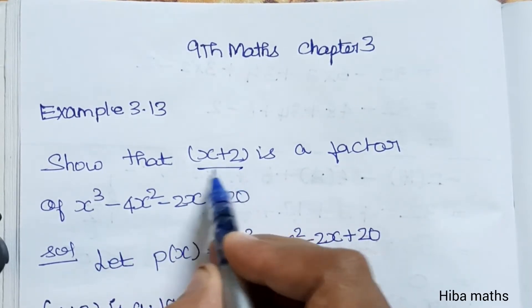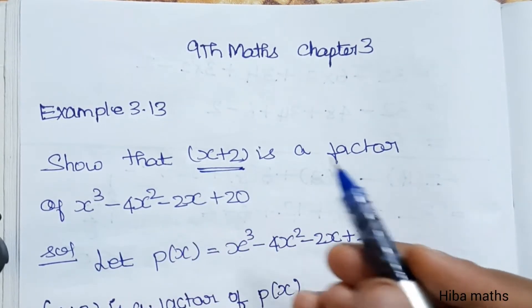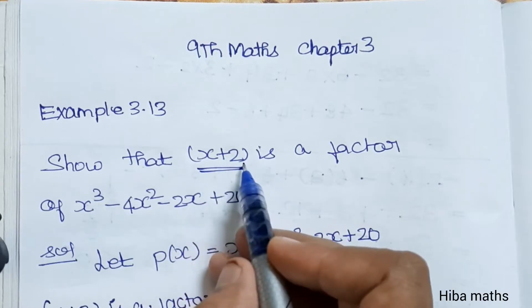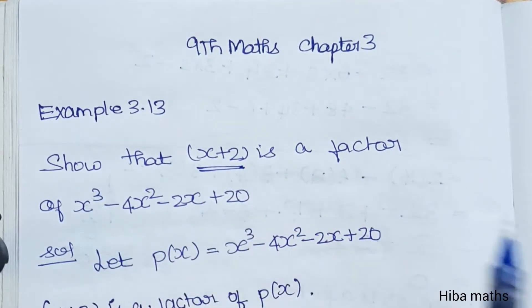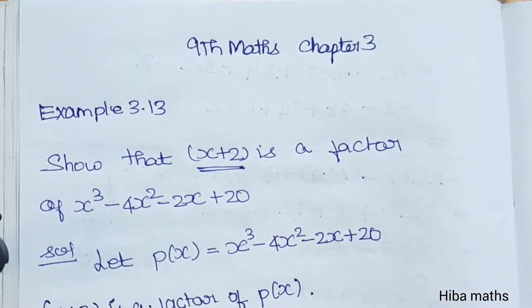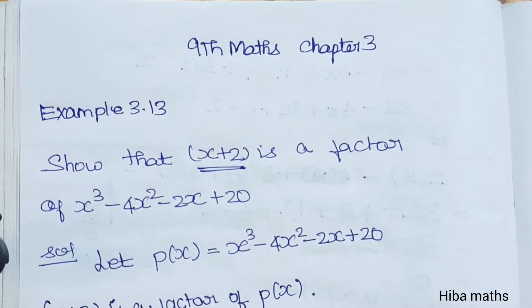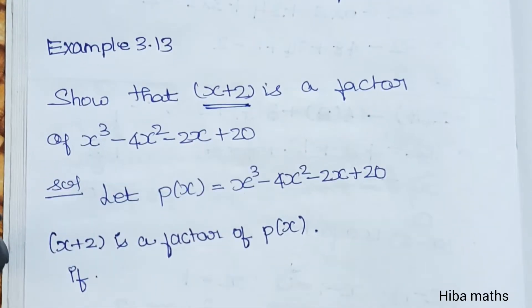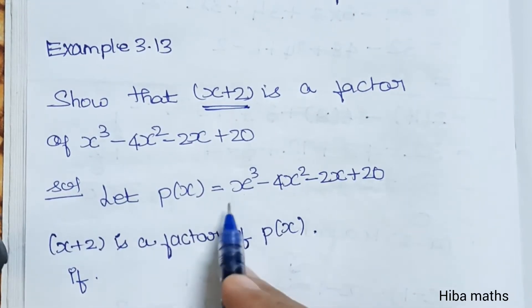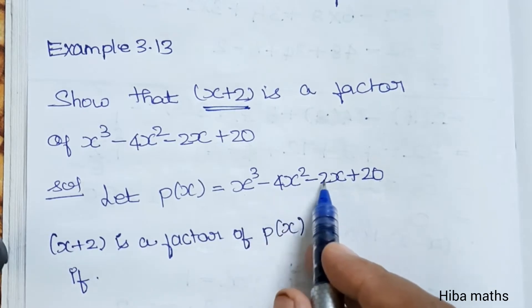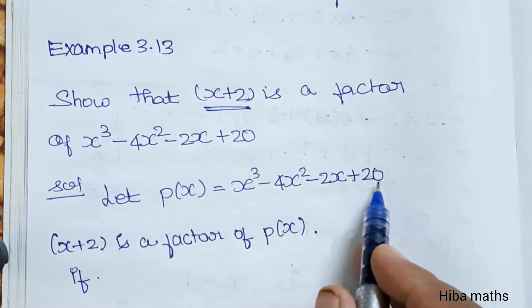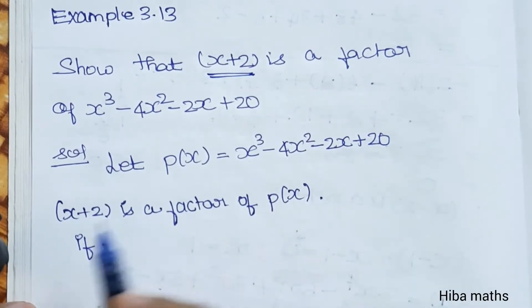It's very easy. You substitute it with x equals 0, it's a factor. Let p of x be equal to x cube minus 4x square minus 2x plus 20.